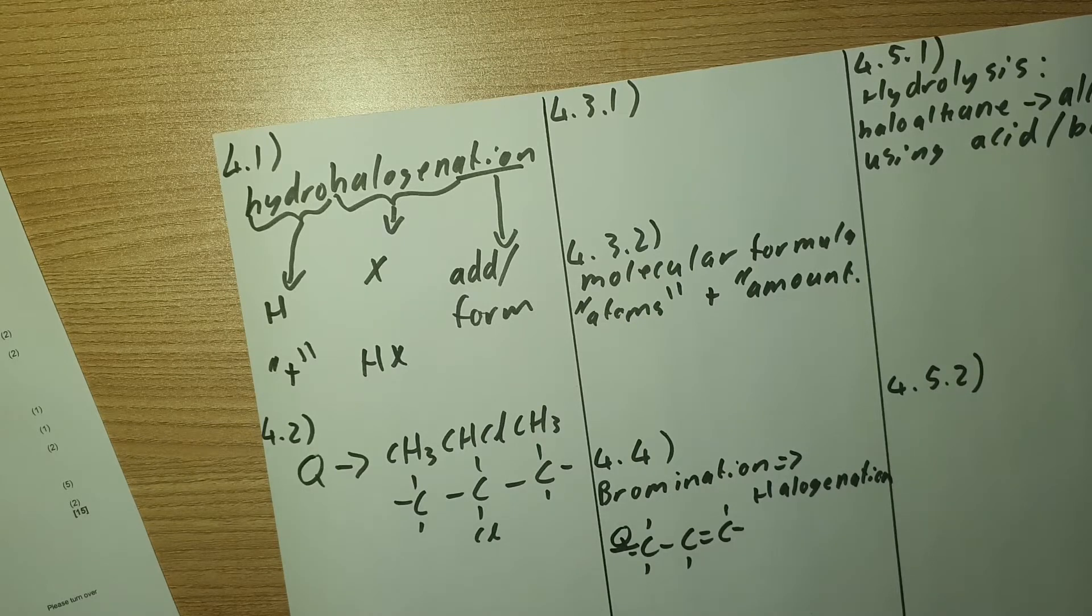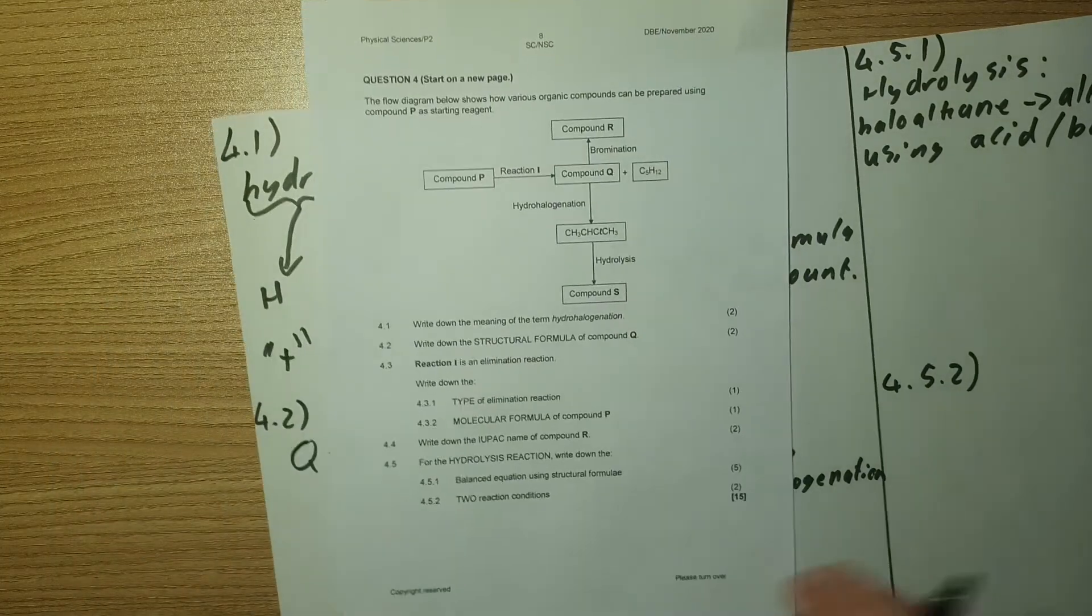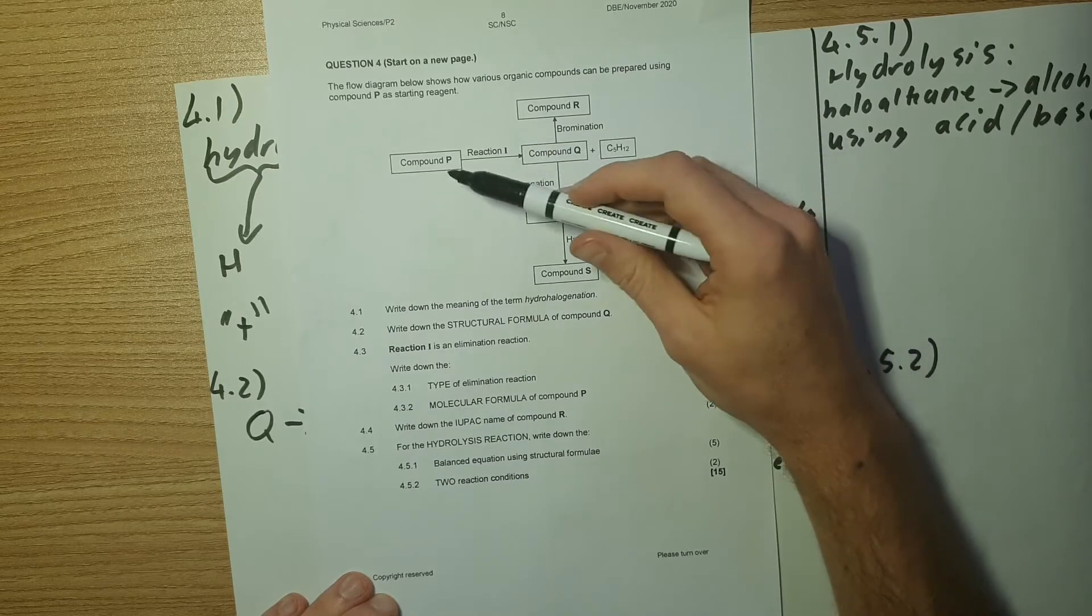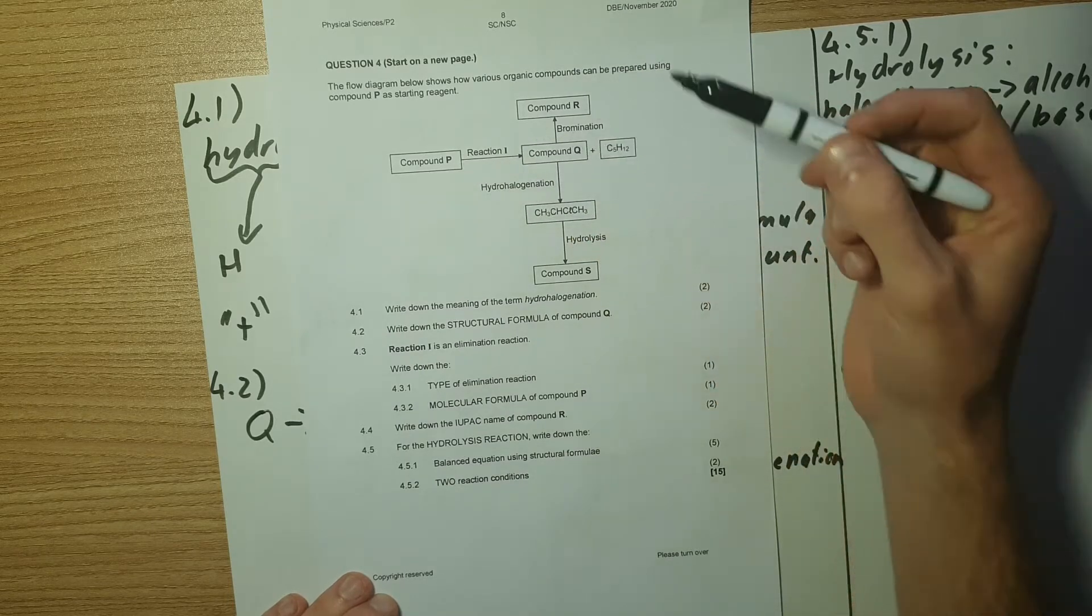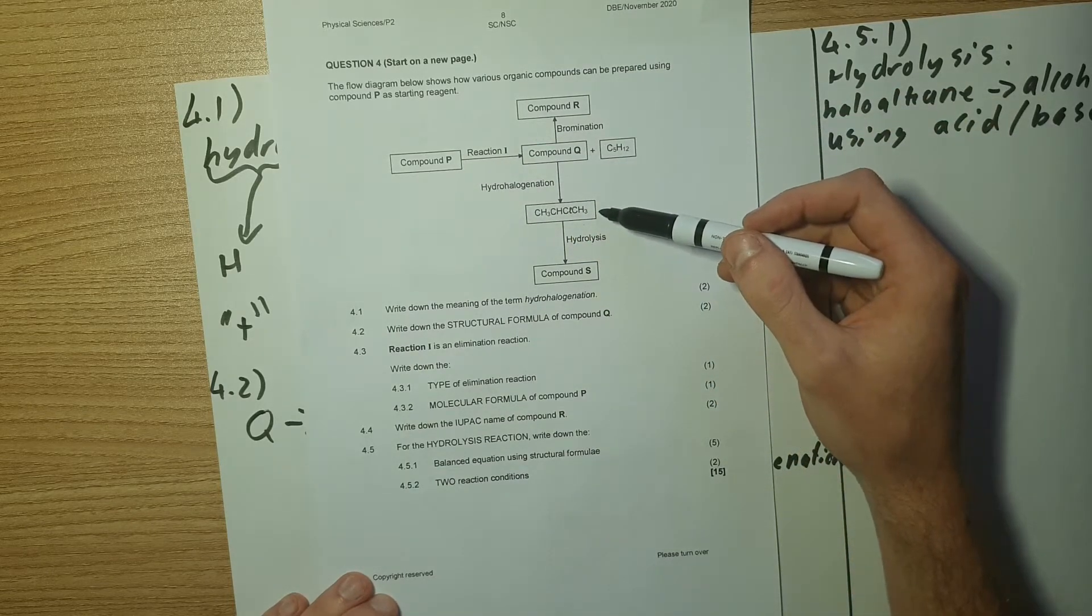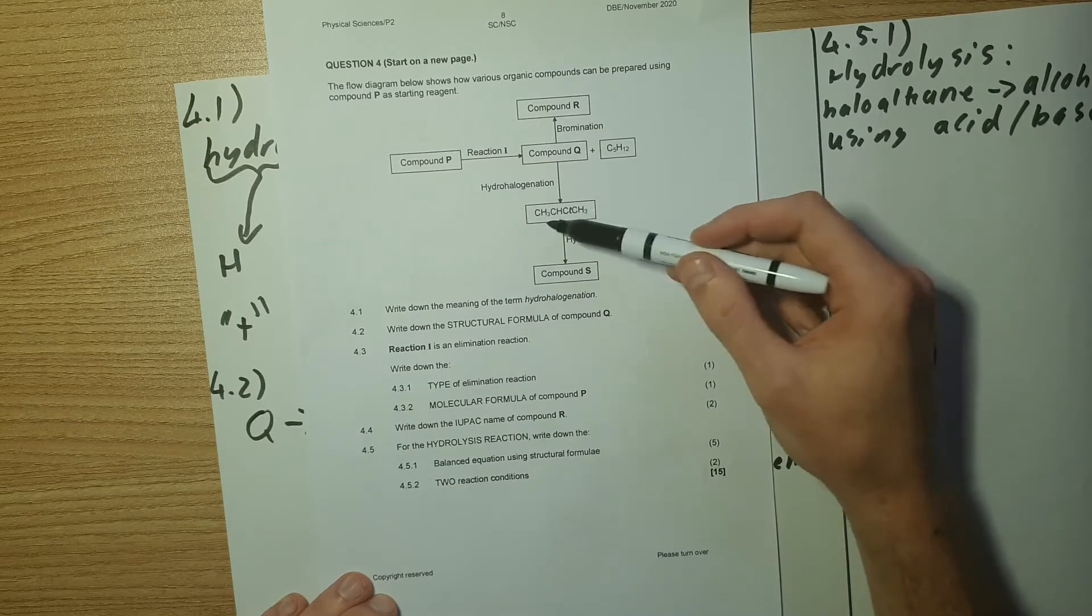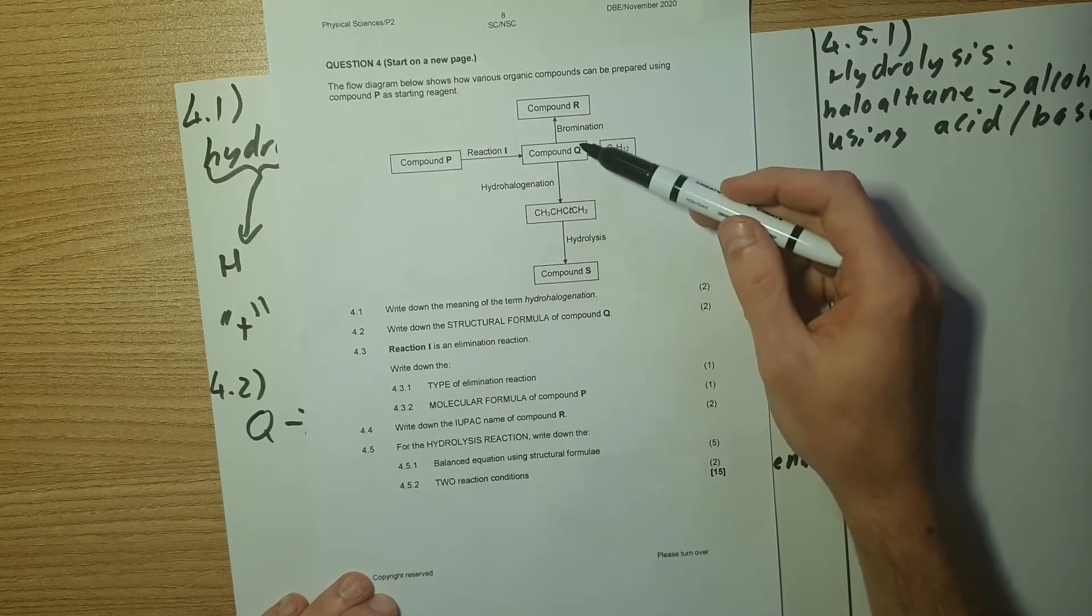4.2 then asks us write down the structural formula of Q. So we want to know what is Q after reaction 1's taken place. The clue here is look down here after the halogenation's taken place, so we've got that compound, that's what we're going to be using to find Q.